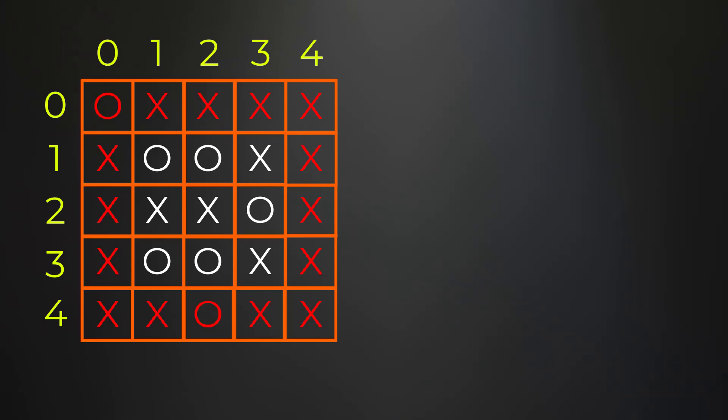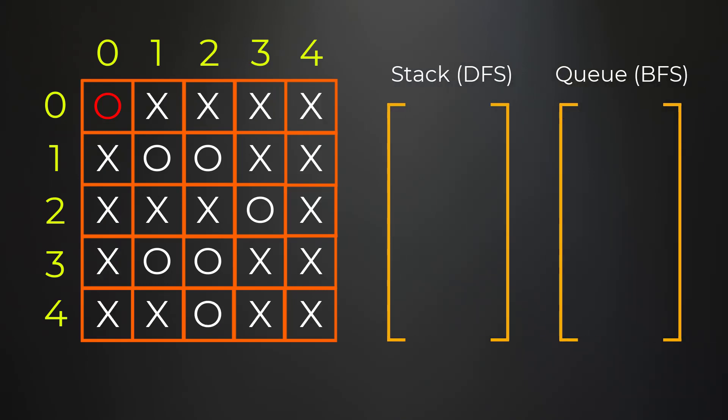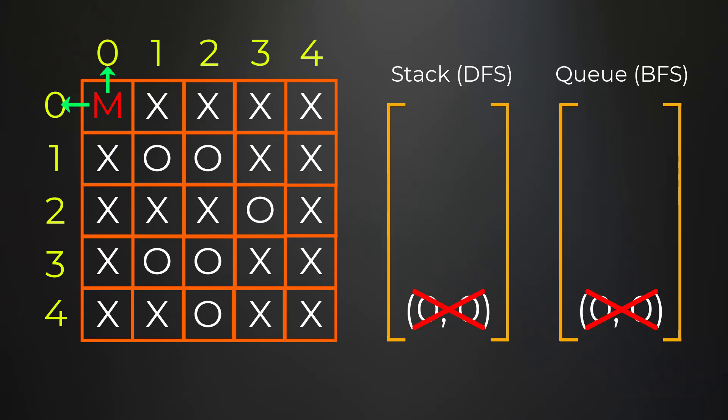First, we loop over the borders of the matrix and determine if we need to perform a DFS or BFS. Starting at position (0,0), we have a character O, so we start a search there. We change it to a character that is neither X nor O — I'll use 'M' — then check if any neighbors are also O's. Up and to the left are out of bounds; right and below are X's, so the search stops.